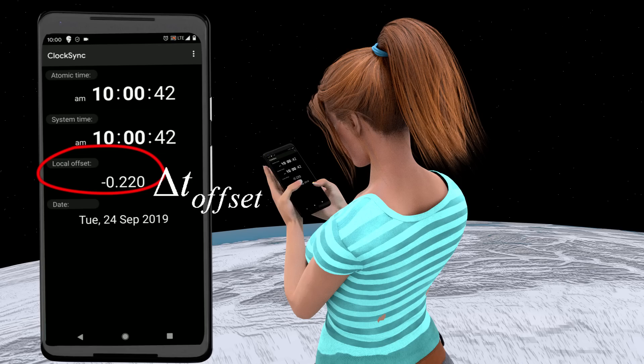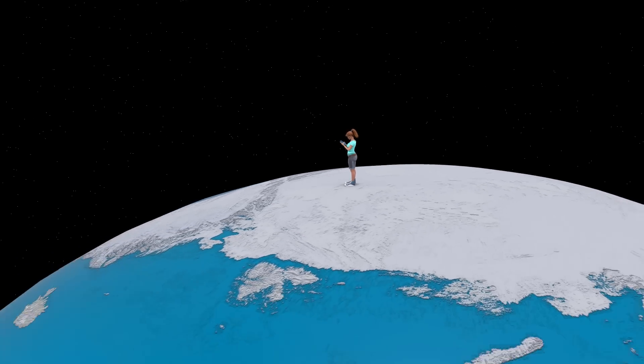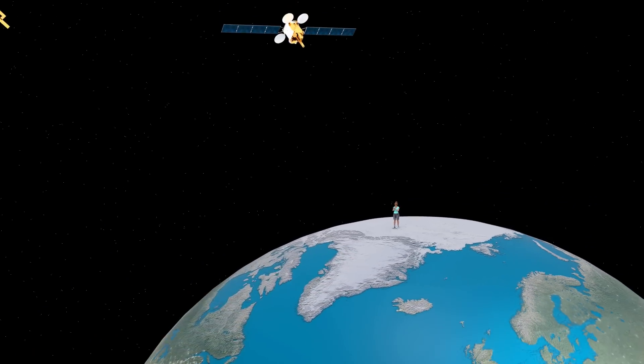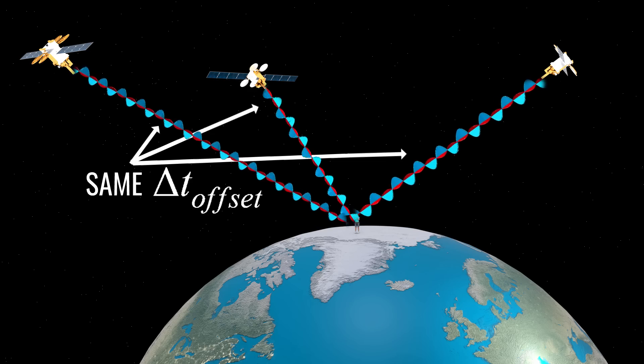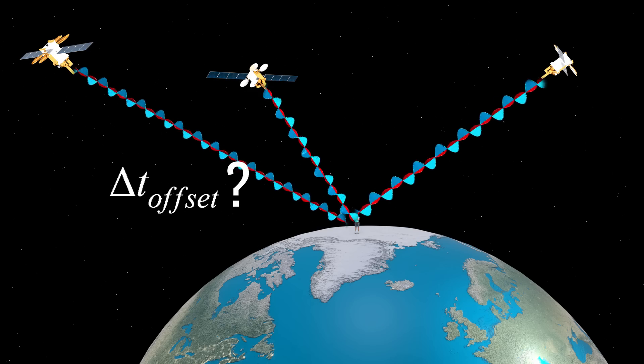The good news is that the time offset of your smartphone, with all three of the satellites, is the same, since the satellites all keep the same time. The time offset value of your device becomes the new unknown.